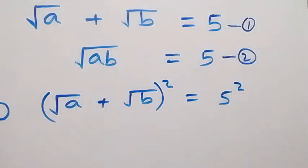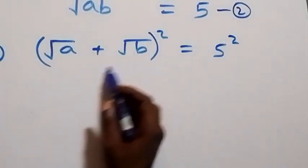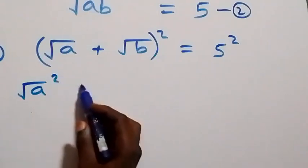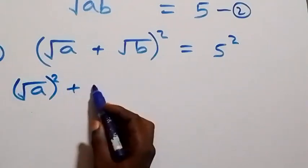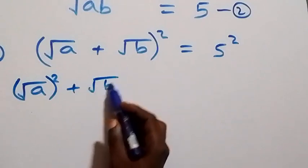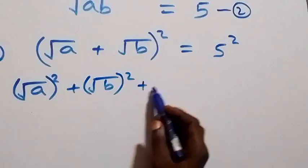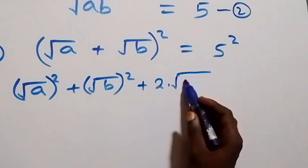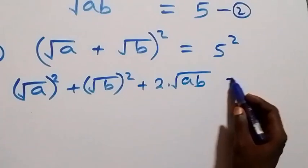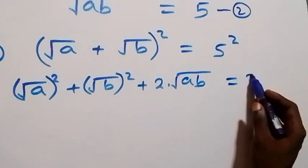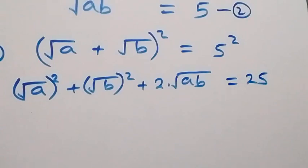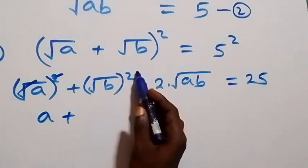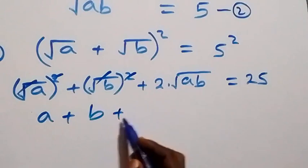We square both sides. The expansion becomes root a squared, plus root b squared, plus two times root a times root b, which we can bring together as root ab, equals to five squared, that's twenty-five. Simplifying, square cancels square root, so we have a plus b plus two times root ab.